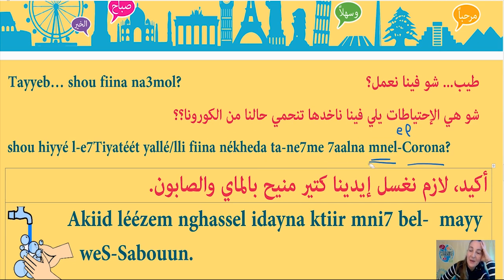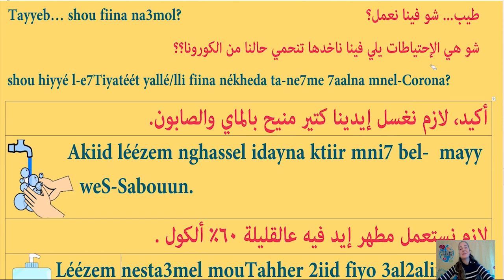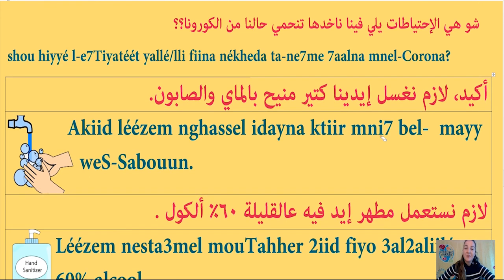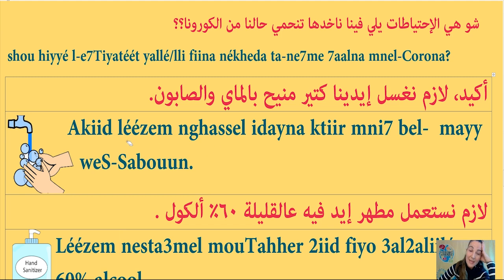First precaution — أكيد لازم نغسل إيدينا كتير منيح بالمي والصابون. أكيد means 'of course,' لازم means 'must,' نغسل means 'we wash,' إيدينا means 'our hands' (إيد = hands + نا = our). كتير منيح means 'very well.' بالمي means 'with the water' (بي = with + ال = the + مي = water). So: of course we have to wash our hands really well with water and soap.